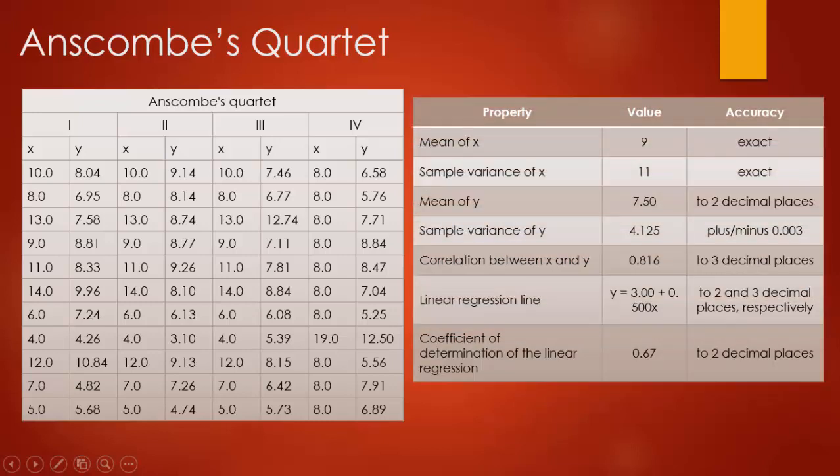Even if you use basic statistical techniques like mean, variance, correlation, regression, you will find that each of these datasets has the same mean for X and Y, same variance for X and Y. Even the correlation and regression between X and Y is almost similar and the coefficient of determination of linear regression is also same to 2nd or 3rd decimal places.